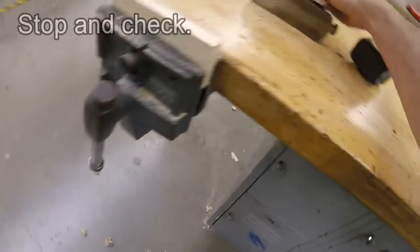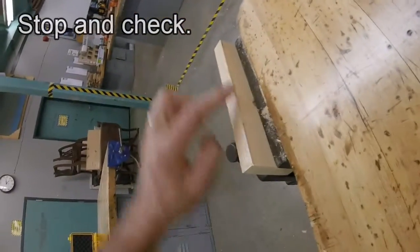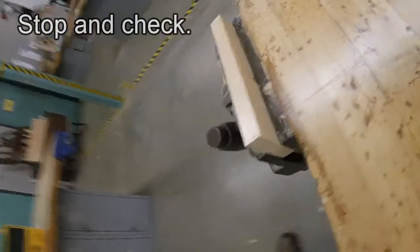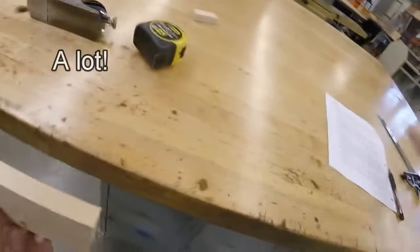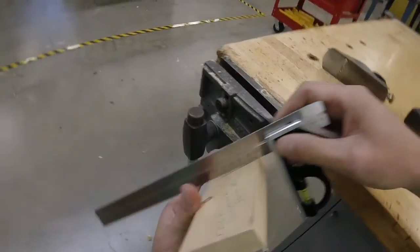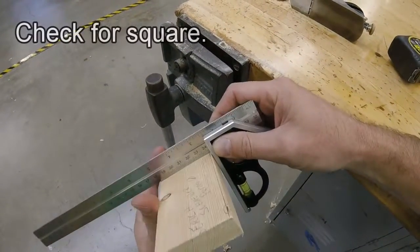As I'm doing this, I'm going to stop and check, setting the block plane on its side. I'm going to check both sides to see where my line is and make sure I'm staying on it. I may also want to take this off and use my combination square to make sure that I'm making a good square cut.